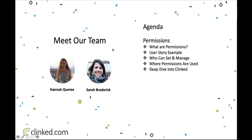For our agenda we're going to look at what permissions are and show you a use case store example, and who can set these up and manage them within Clinked, then where permissions are used and where you can locate them. Then we're going to go into the Clinked environment and show you some live examples, and we'll have our Q&A at the end. If you have any questions we'll be happy to answer them — you can either type them in or ask them directly.